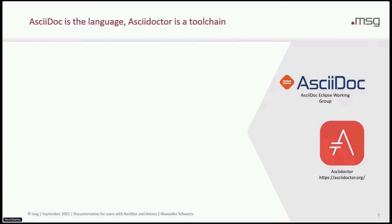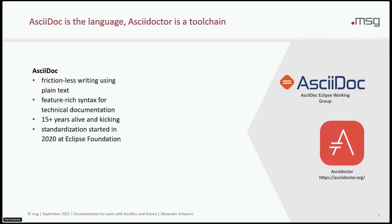Antora builds on top of AsciiDoc and Asciidoctor. AsciiDoc is the language of the content and Asciidoctor is the tool chain to create HTML from AsciiDoc content. AsciiDoc is frictionless writing using plain text, therefore it's well suited to be checked into Git, so you can also cherry pick it and compare it with older versions. It has a feature-rich syntax for technical documentation — great support for lists, tables, listings and call-outs — so everything you need to write really good technical documentation.